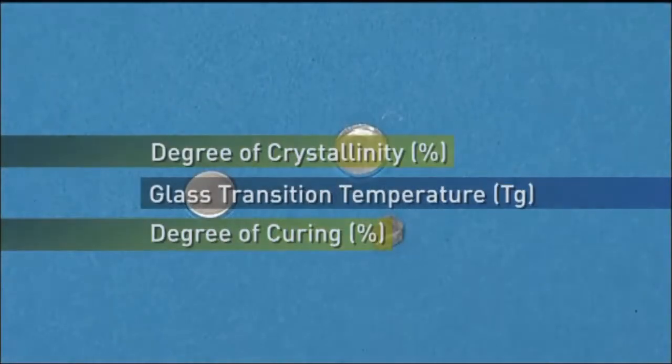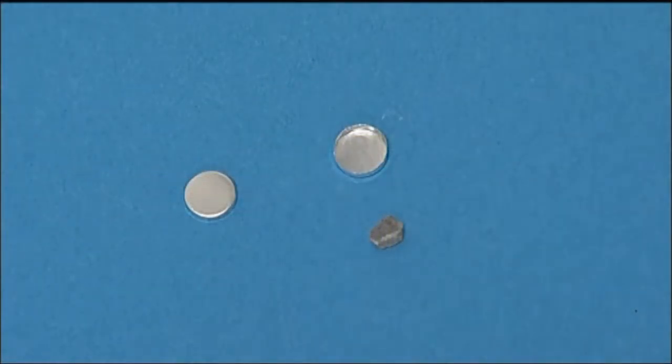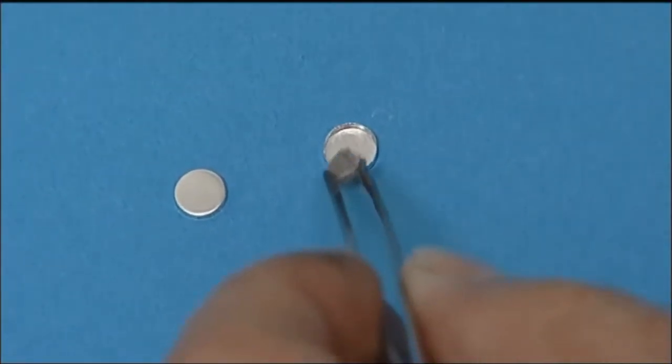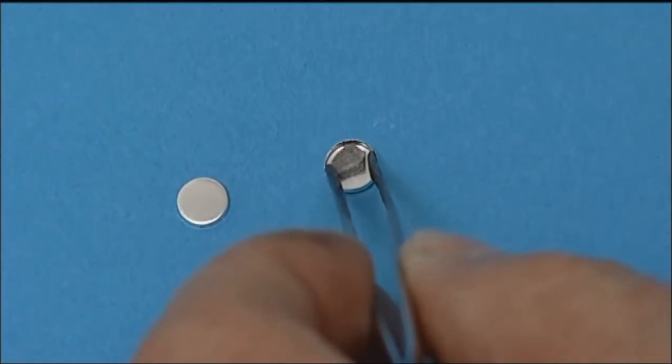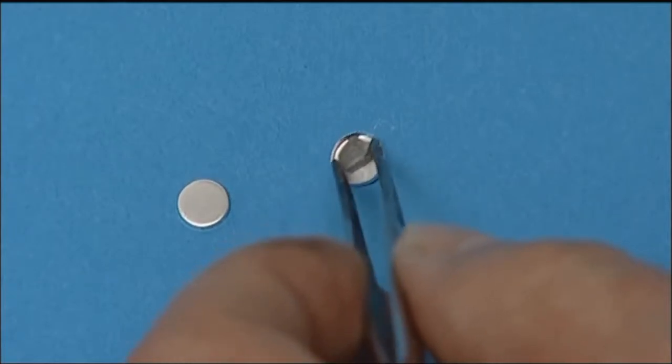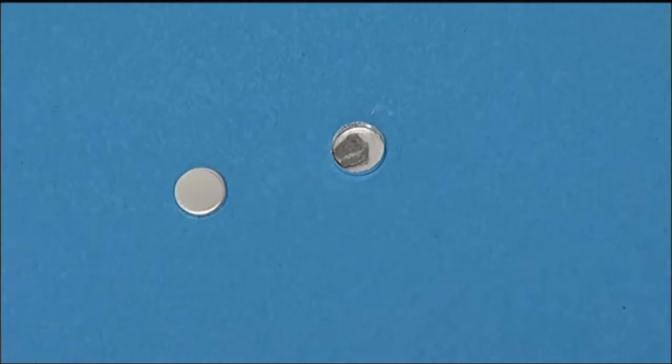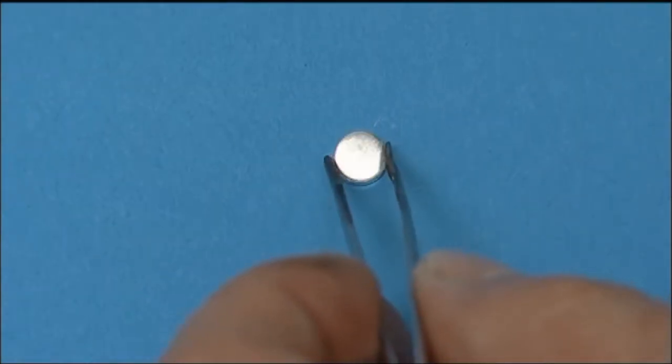This is the aluminum pan for the differential scanning calorimeter, able to measure the glass transition temperature and the degree of curing of the polymeric sample. Initially we put a small sample of 5 to 10 milligrams inside the aluminum pan, close and seal it off.